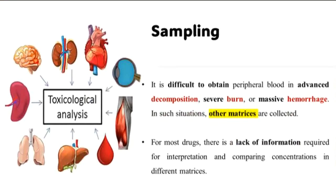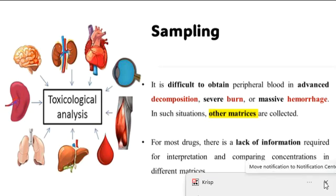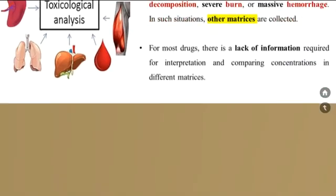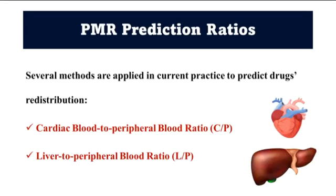However, it is difficult to obtain peripheral blood in cases of advanced decomposition, severe burn, or massive hemorrhage. In such situations, other matrices are collected. For most drugs, there is a lack of information required for interpretation and comparing concentrations in different matrices. There are several methods applied in current practice to predict drug redistribution, such as the central to peripheral blood ratio and the liver to peripheral blood ratio.